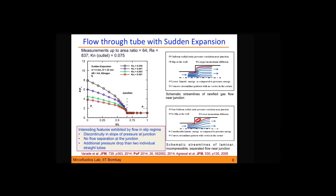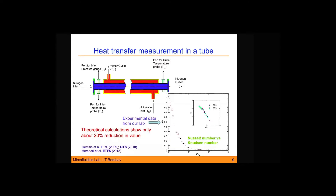We tried to solve these flows numerically using a commercial solver. We found that for one case (sudden expansion) we could get reasonably good agreement, but when we reversed the flow direction and ran simulations for the contraction case, even the gross parameters like overall mass flow rate and pressure drop correlation were totally off. This gave us the idea that something more fundamental is involved — perhaps the governing equation itself may not be applicable in these cases.